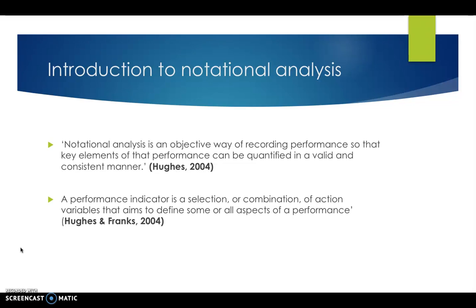When using notational analysis, a performance criteria is devised — these are the things that the observer will be looking at within the performance. According to Hughes and Frank in 2004, a performance indicator is a selection or combination of action variables that aims to define some or all aspects of a performance. Not all performance criteria can be applied to all sports, and within those sports, not all criteria will be relevant to each player as they play certain positions. There are three different factors that can be analysed within notational analysis: movement, tactics, and technical.